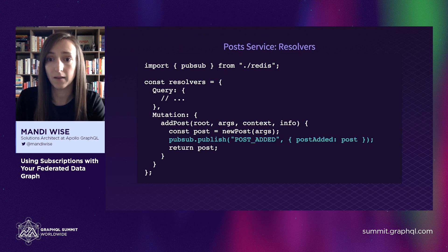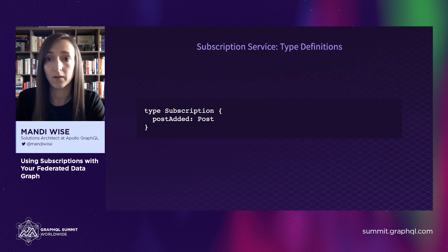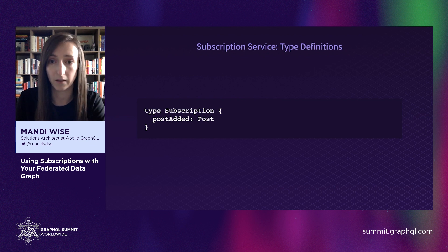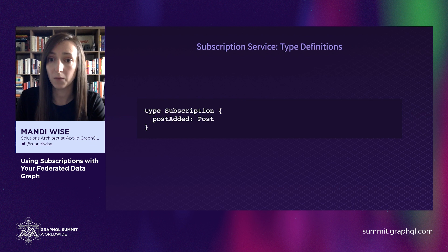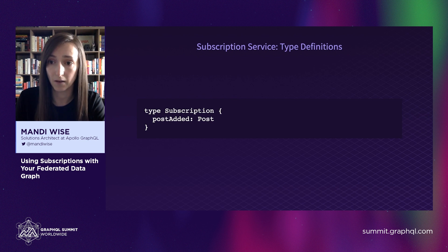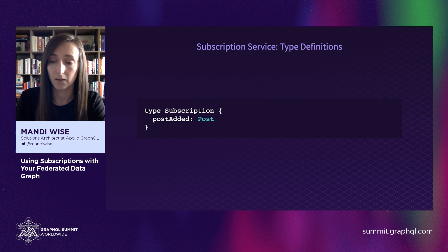We don't include anything in that payload about the post author apart from its ID. Over in the subscription service, the type definitions we manually define here will only contain the subscription type and any fields we want to add to it. However, because we're going to merge the types from the federated datagraph into the schema, we'll be able to use those types as output types for the subscription fields even though they are not explicitly defined here. In this case, we use the post type that is owned by the post subgraph.